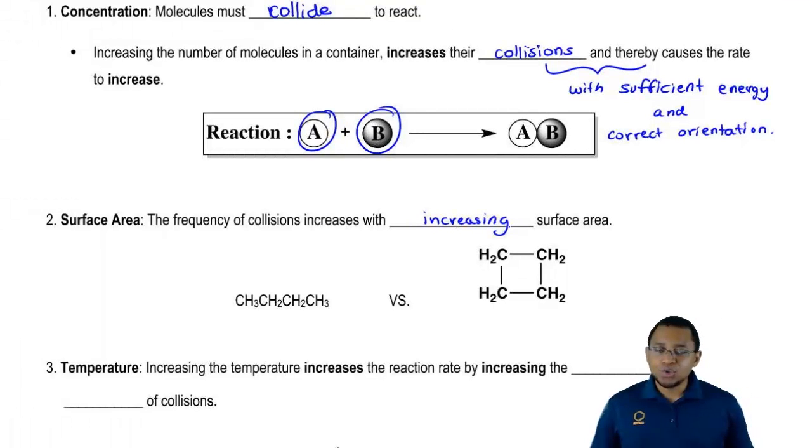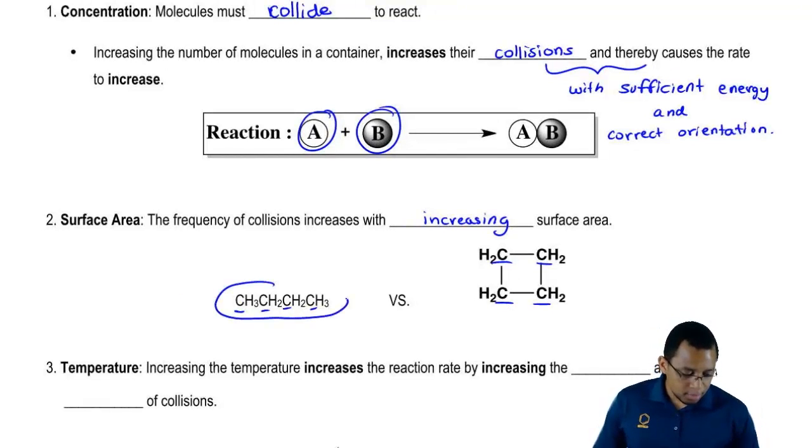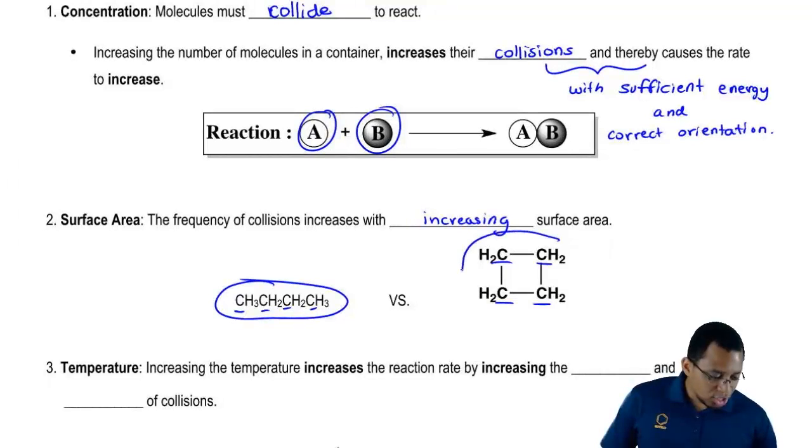If we take a look at these two compounds, both have four carbons, but they're arranged differently. In the first one it's kind of linear, it's just a straight chain, but in the other one it's shaped like a square, so it's cyclic, it's a ring.